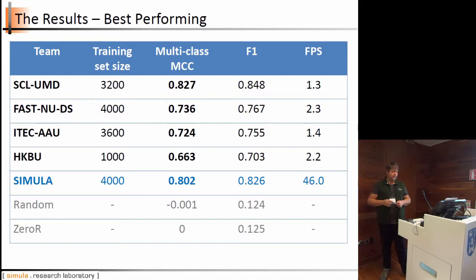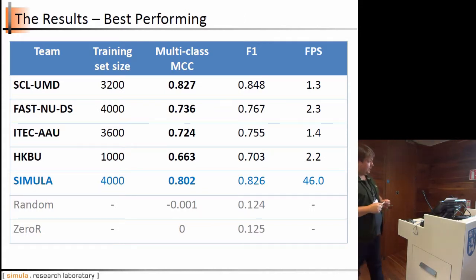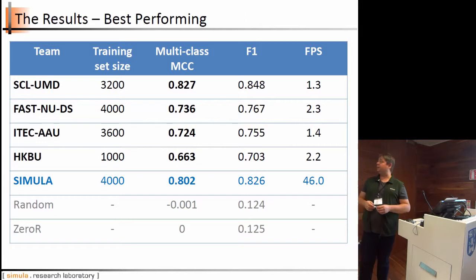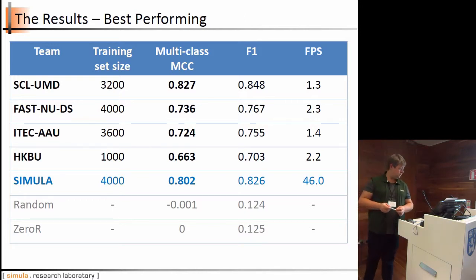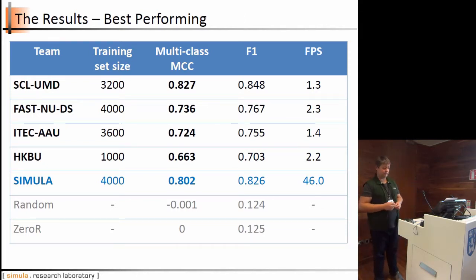Surprisingly, all teams achieved very good results — for a first-time task, we were really impressed. As you can see in the official final table, all teams performed much better than random and zero-reference baselines. The only concern is that no team could achieve real-time performance for this task. All these deep learning and feature extraction approaches are not really real-time.